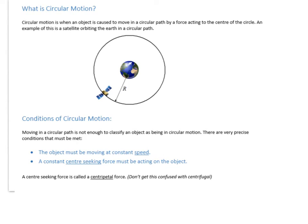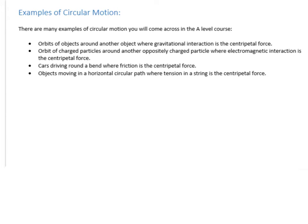Where do you come across circular motion in the A-level course? The first example is gravitational force — a satellite moving around a planet, a planet moving around a star, a star moving around the black hole at the center of a galaxy. Any time something is in a circular orbit it's in circular motion, because the gravitational force is constant throughout.